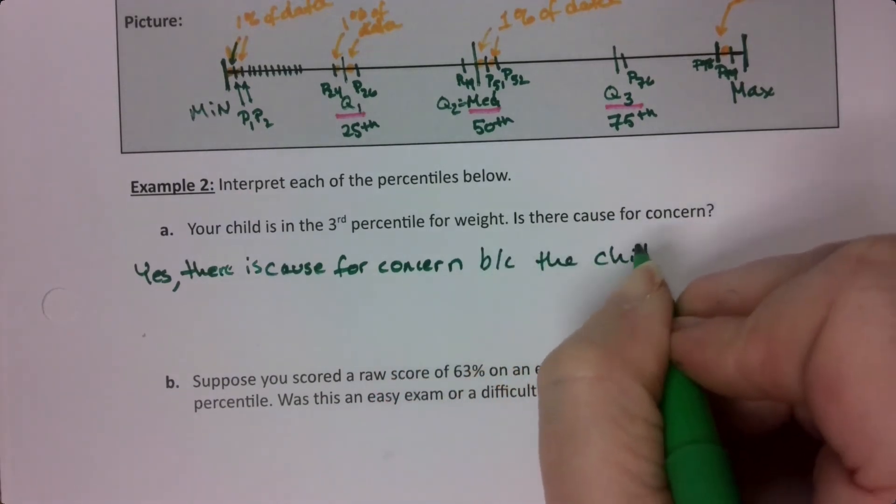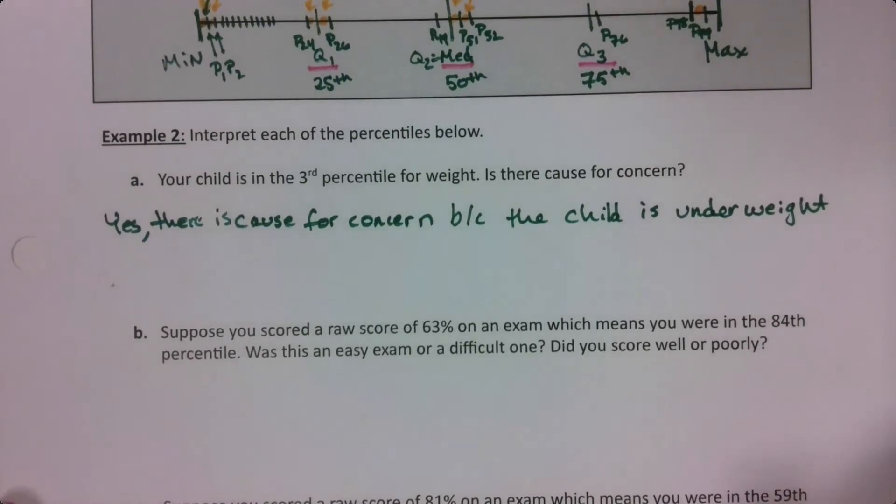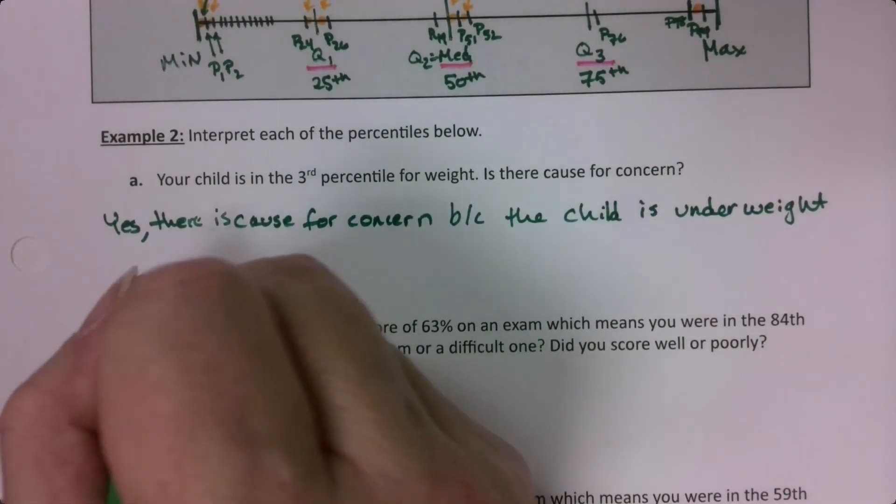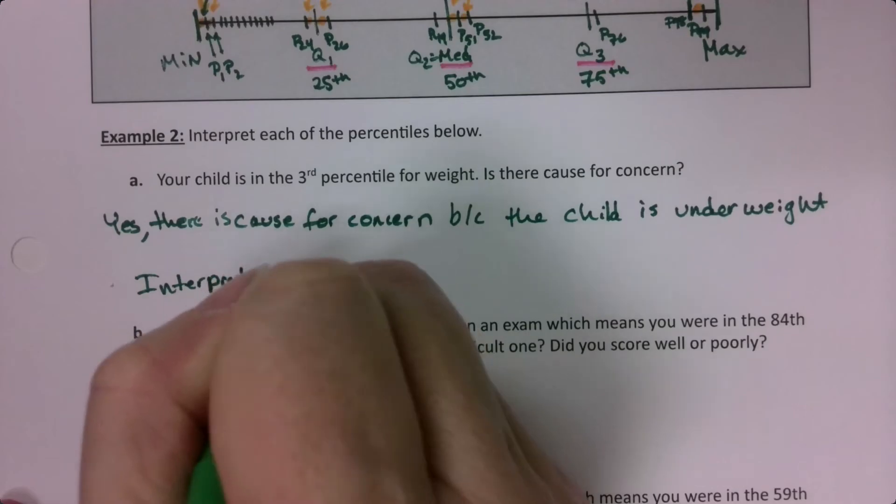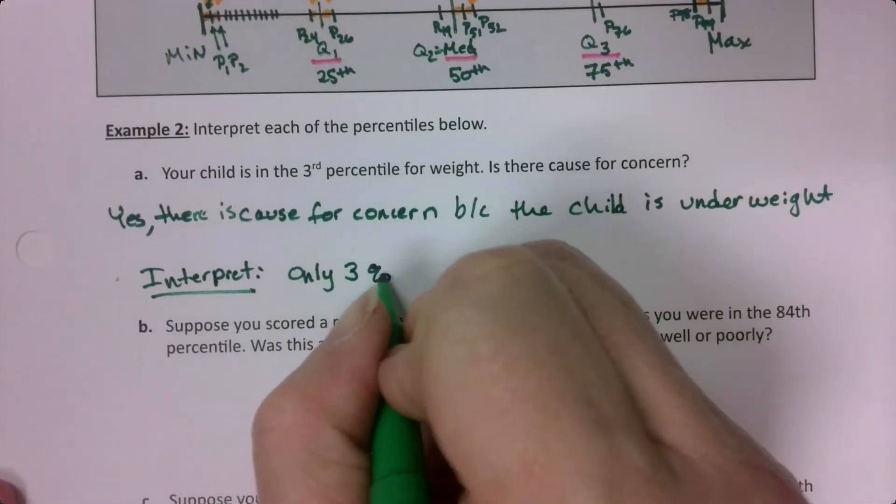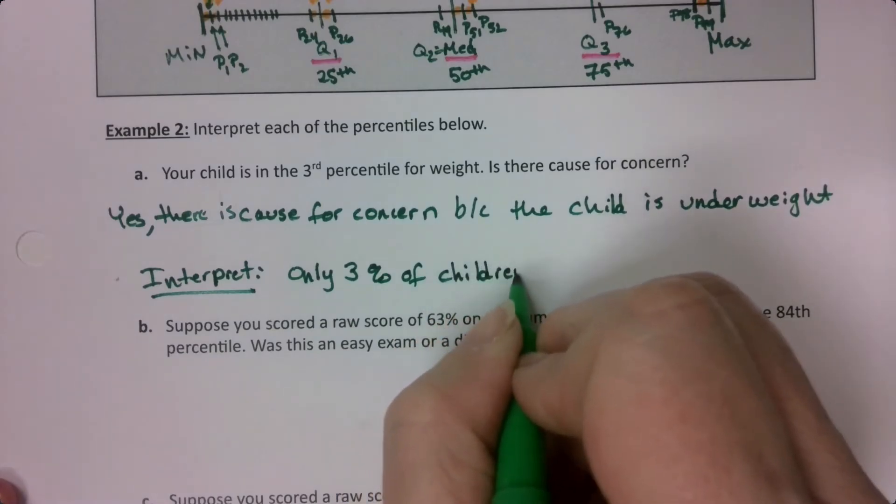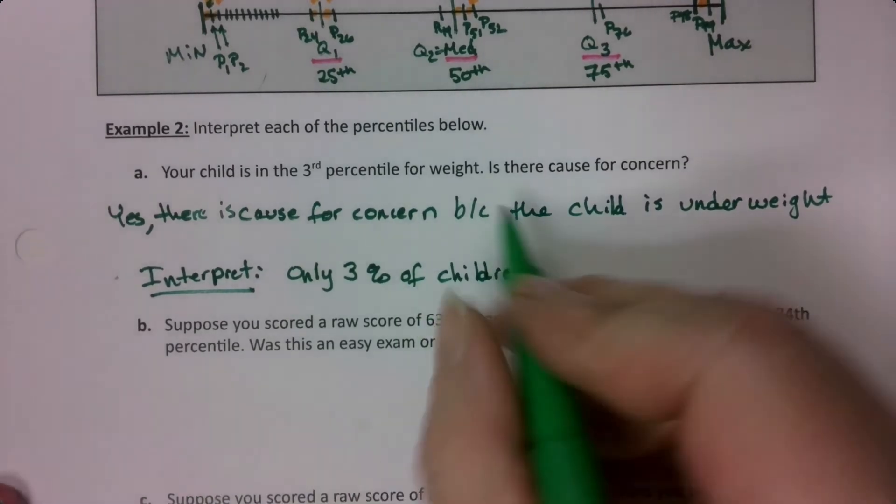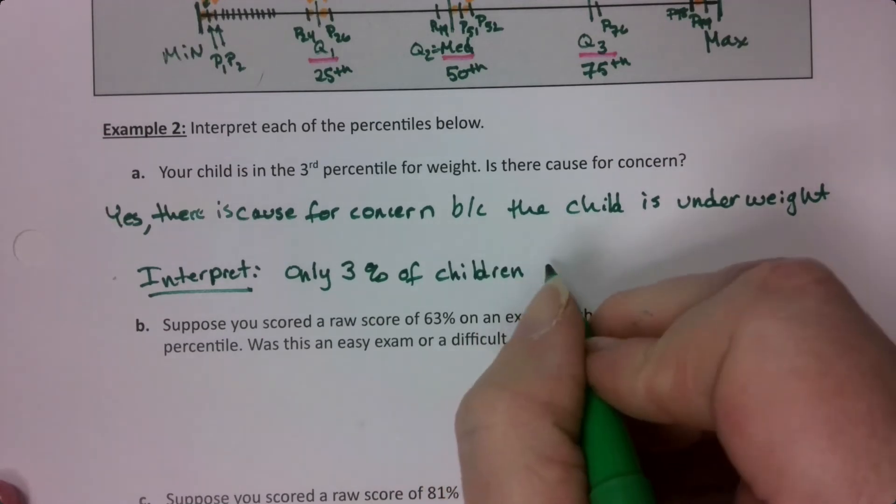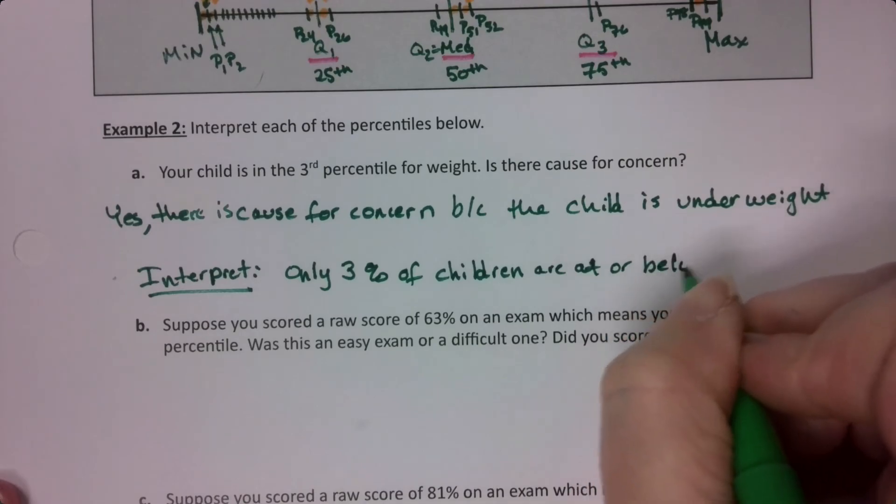Now what do I mean by that? This is why the pediatricians have these charts in their offices. And some of you, if you've had kids, you know what I'm talking about cause you've done this. So if we go to the interpretation piece, only 3% of the observations, of 3% of children, it would be children of the same age, by the way, they always compare them to the same age as your child. 3% of children are at or below your child's weight.